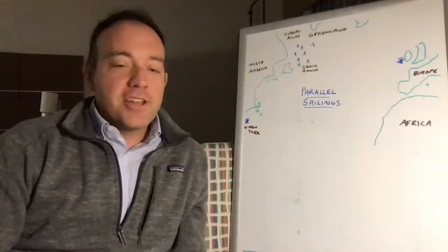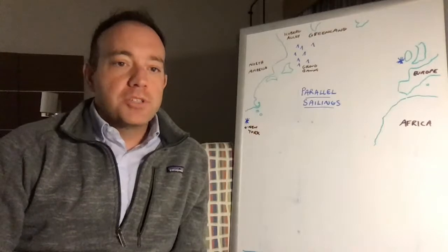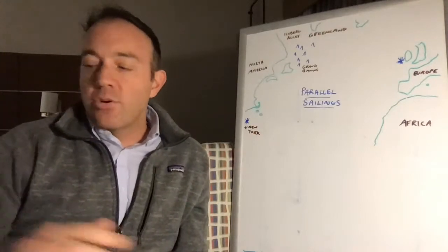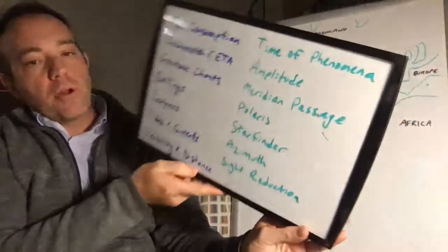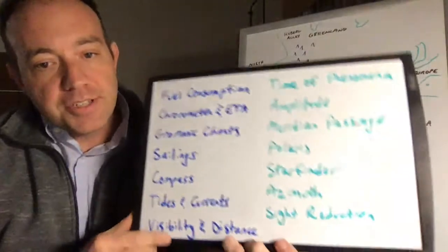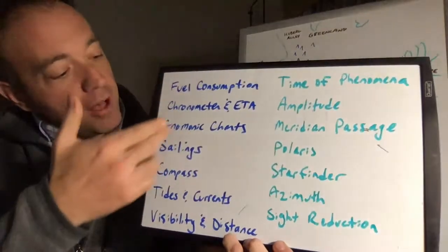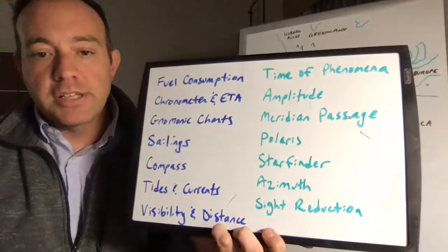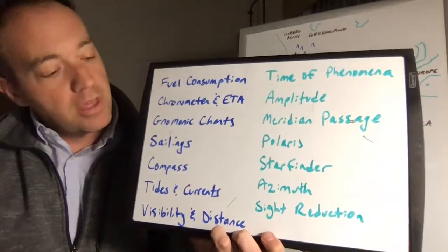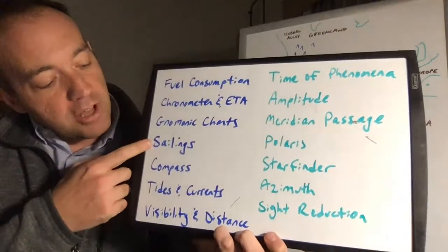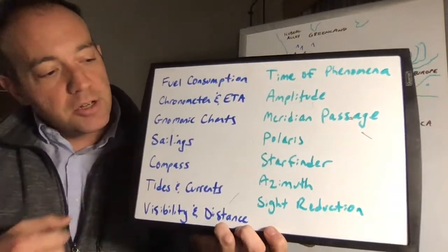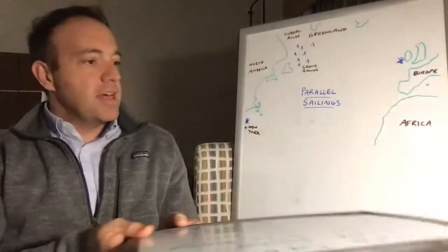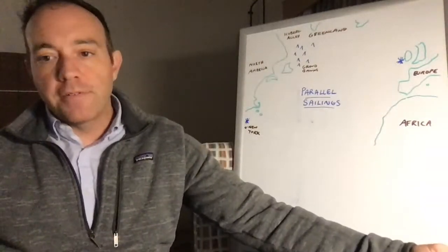We're going to talk tonight about another type of navigation problem called parallel sailings. If you think back to all the different types of navigation problems out there to solve, there's quite a few. We've done chronometer and ETA problems. There's all these other types of problems you can run into on your licensing exam. We're going to talk today in a category called sailings, which are pretty challenging for some folks.